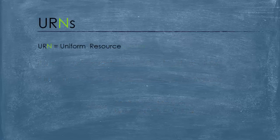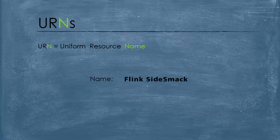A URN stands for Uniform Resource Name — can you guess that? And now this should be obvious: it is the name of the resource. In our case, if we want to locate our friend using a URN, we will use his name: Flank Sidesmak.